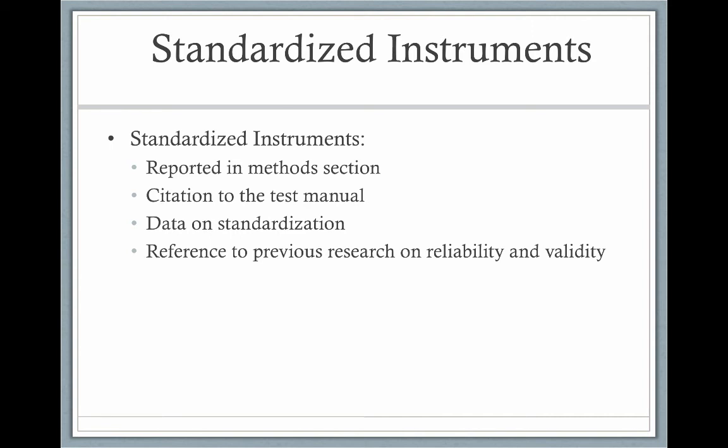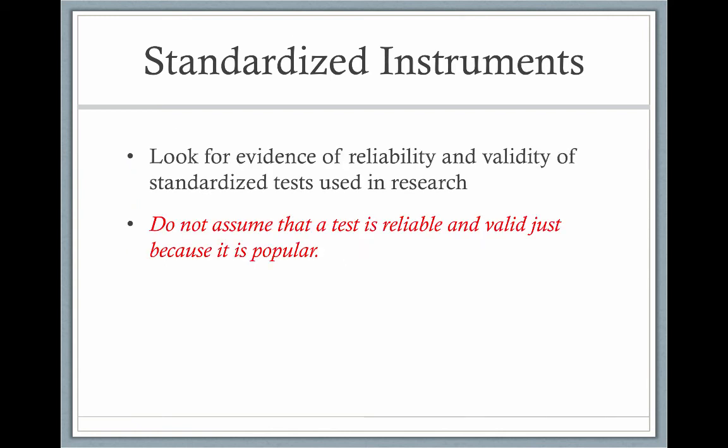Standardized instruments — meaning they've been tested on thousands of people — are reported in the methods section. There should be a citation to the test manual, data on the standardization of the instrument, and references to previous research on the reliability and validity of the instrument being used. Don't assume that a test is reliable or valid just because it is popular.